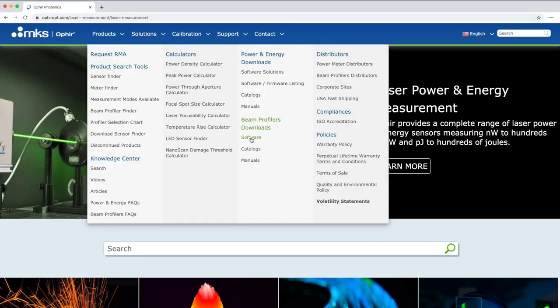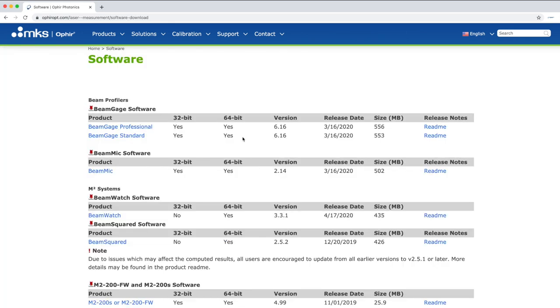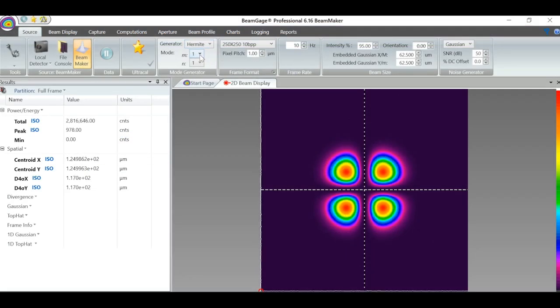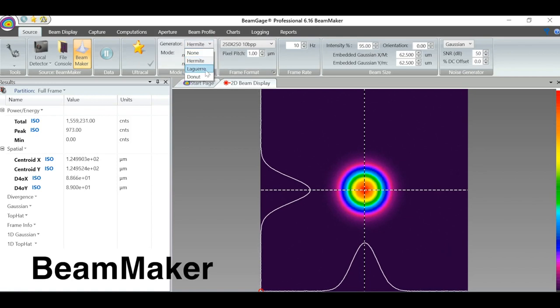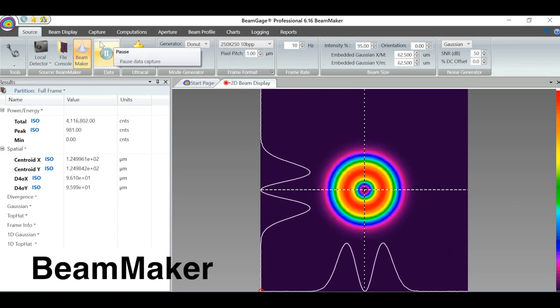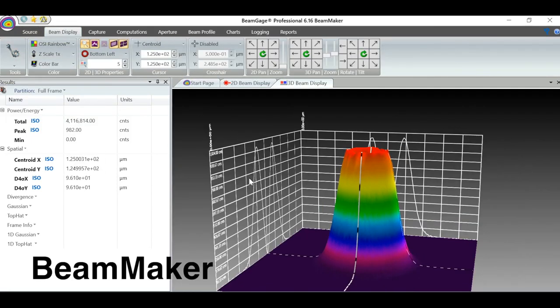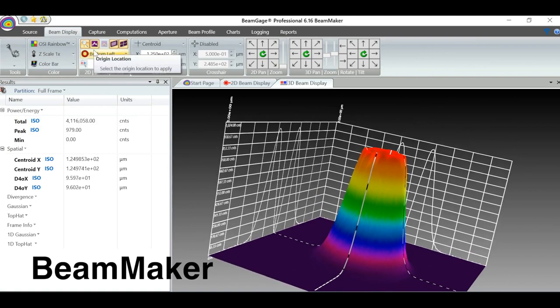To help you get started measuring laser beam profiles, download our beam gauge software for free. Beam gauge includes Beam Maker, a synthetic beam generator, that allows users to practice measuring laser beams and become familiar with the parameters needed to understand beam quality and characteristics.